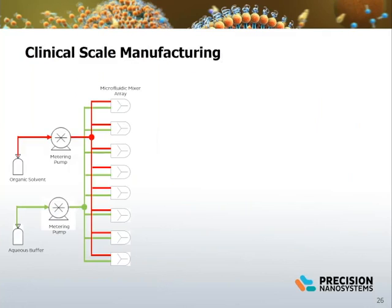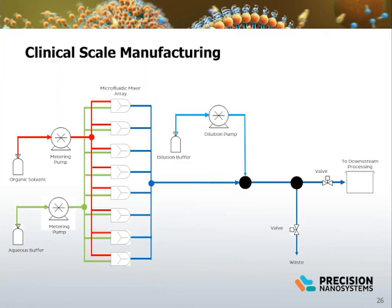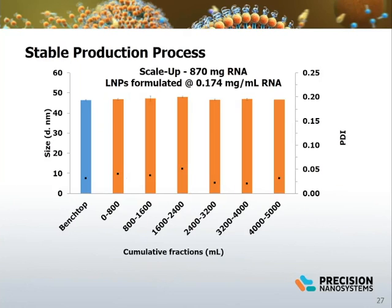To illustrate the process for clinical scale-up manufacturing: the organic solvent and aqueous buffers containing nanoparticle-forming materials are pumped through the NanoAssembler scale-up system using continuous flow pumps. Manifolds split the two inlet streams into identical microfluidic mixers in parallel, where the solutions are mixed forming nanoparticles. The nanoparticles are then collected, diluted, and passed onto downstream processing.